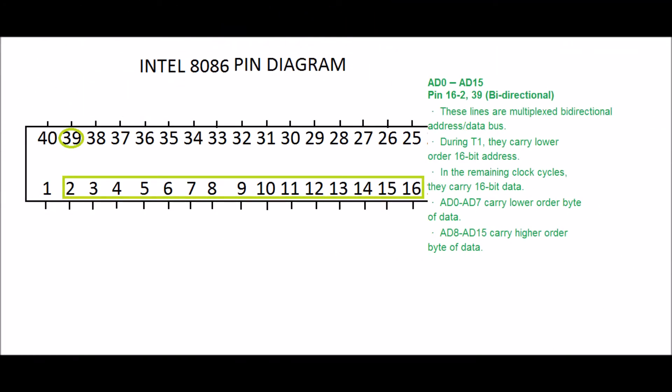AD0, AD14, and AD15. PIN 16-2 and PIN 39, bidirectional. This is called bidirectional because data flows from microprocessor to memory or memory to microprocessor. These lines are multiplexed bidirectional address data bus.